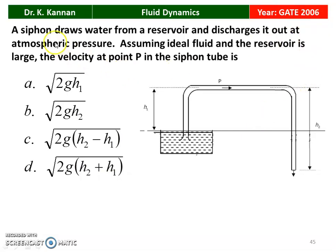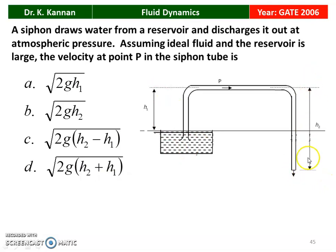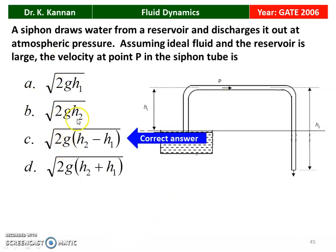Next question from the 2006 question paper. A siphon draws water from a reservoir and discharges it at atmospheric pressure. Assuming ideal fluid and a large reservoir, what is the velocity at point P in the siphon tube? H1 is the head of water in the tank, H2 is the height at the discharging end, and P is the point in the siphon. The correct answer is option C: V = √[2G·(H2 − H1)].